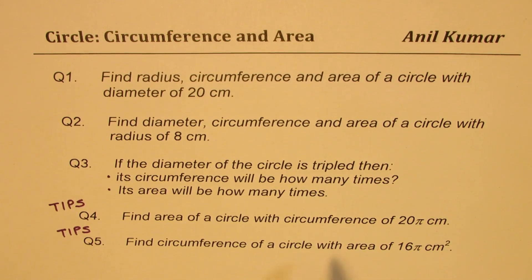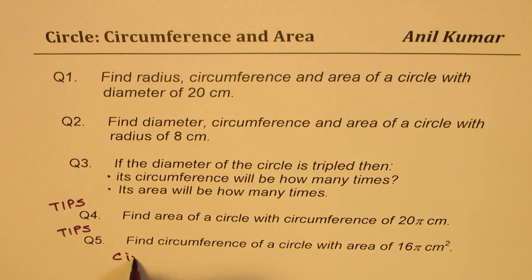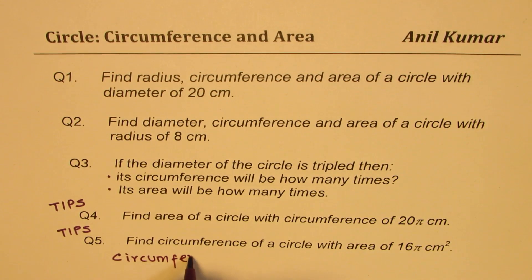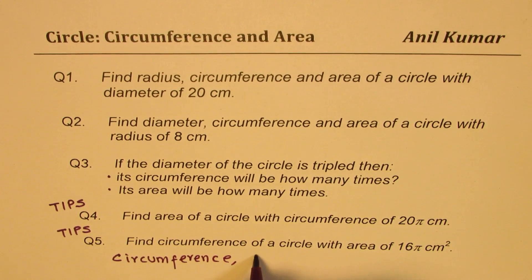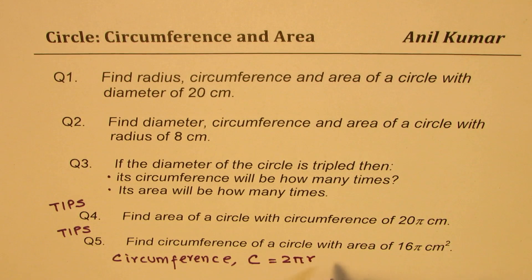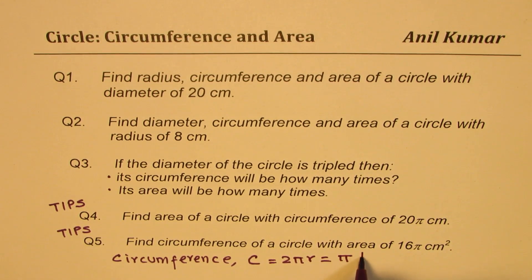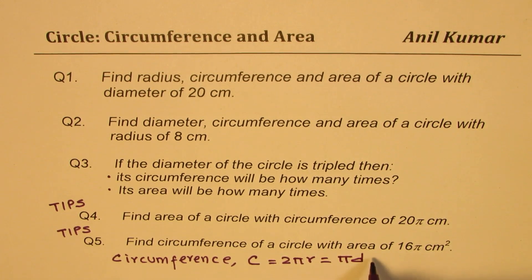Now, what is the circumference formula? Circumference is normally written as capital C, and the formula is 2πr. And 2 times r is diameter, so we should also write this as πd. That is the circumference formula.